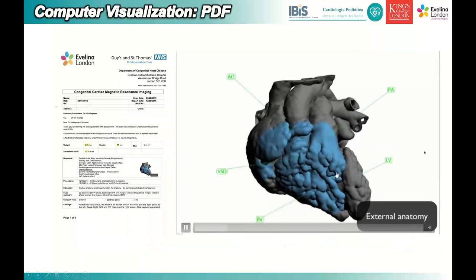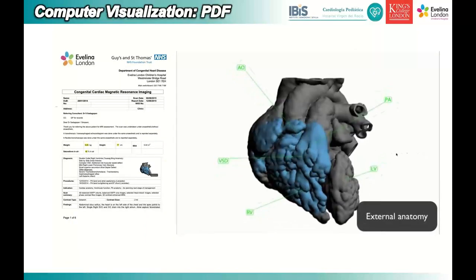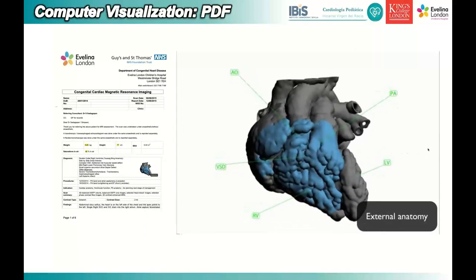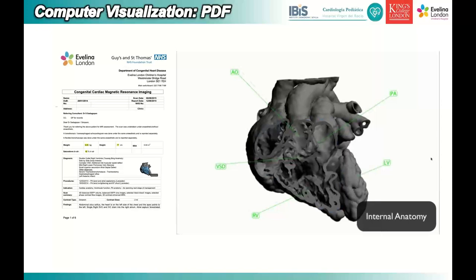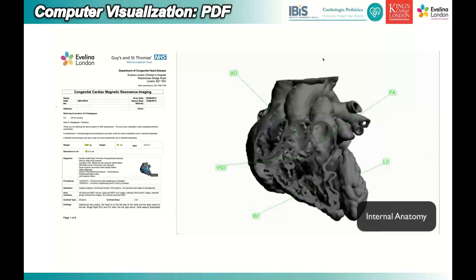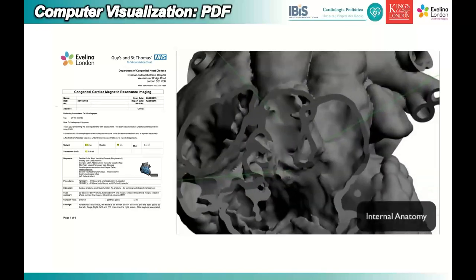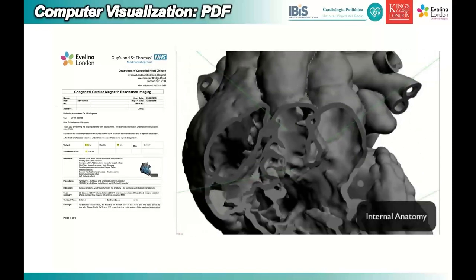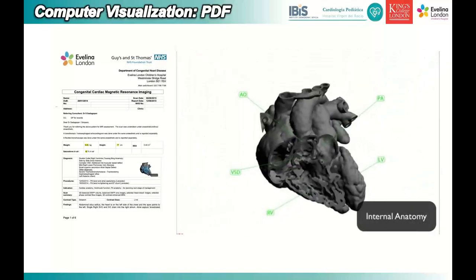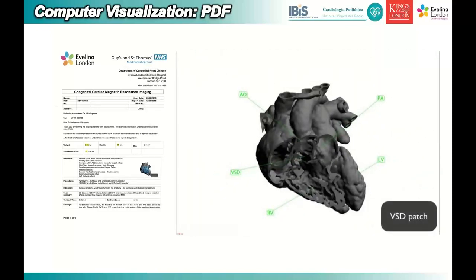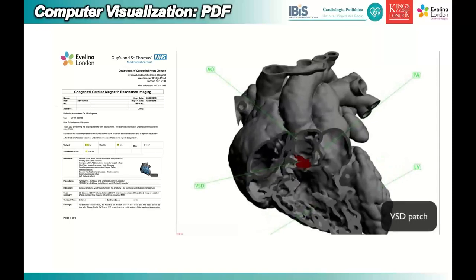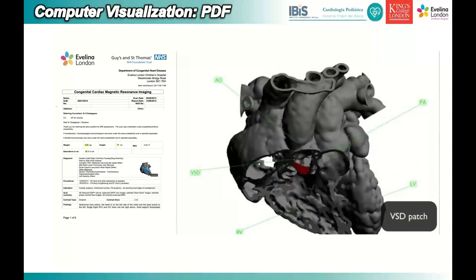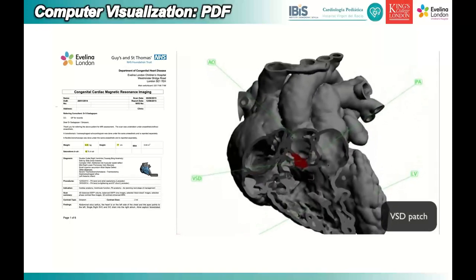For example, at the Evelina we insert the 3D model inside a PDF. It's easy to send, surgeons can check it at home, and it's very handy — although it's still showing a 3D heart on a 2D flat screen.